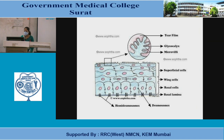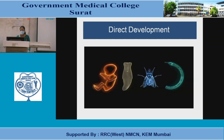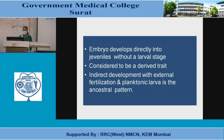In indirect development, the life cycle includes a live larval stage. The larva is an independent stage with different anatomy and niche — biphasic life cycles include benthic adults and planktonic larvae. The larva settles and undergoes metamorphosis into an immature juvenile. In direct development, the embryo develops directly into the juvenile without a larval stage, considered to be a derived trait.